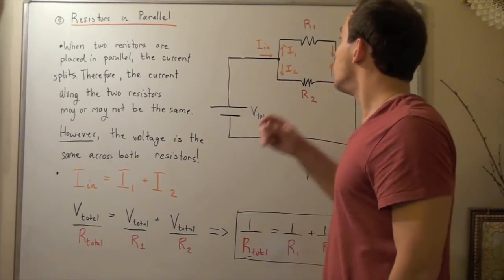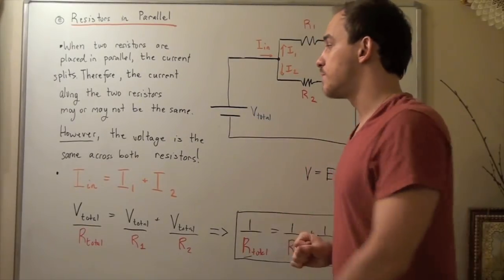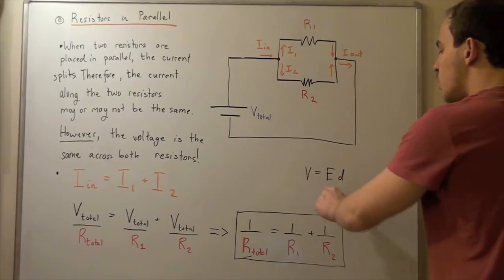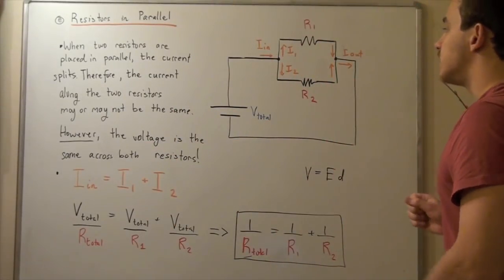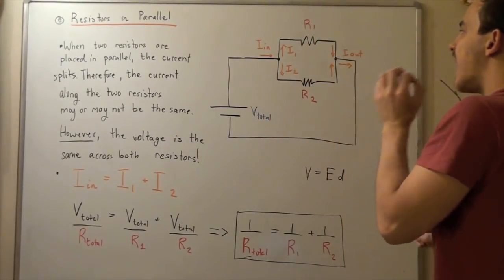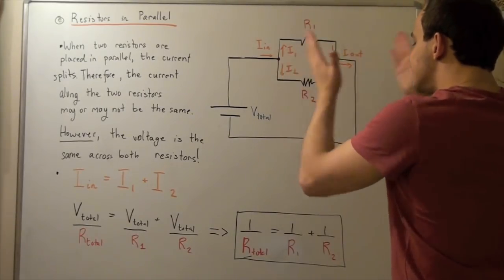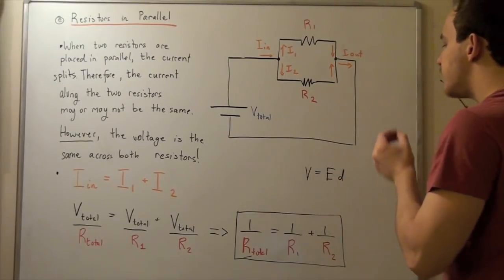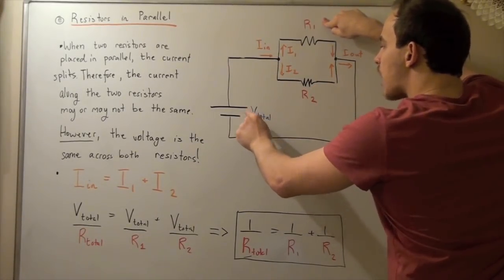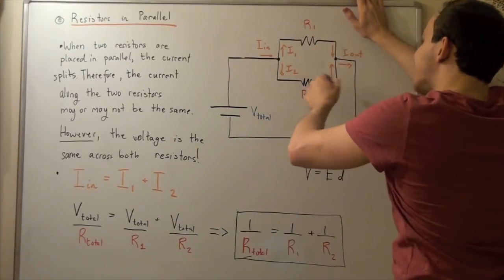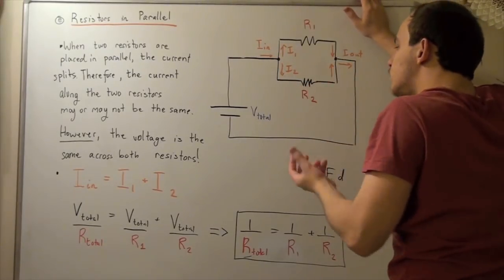Notice the following result: the voltage, given by the formula V equals electric field times distance, is the same across both resistors. The electric field produced in this area is constant, and the distance between the two points is exactly the same for both resistors. Since E and D are the same, our voltage across both resistors is identical — and in fact, our voltage across both is equal to V total. So the current through each branch may differ, but the voltage V total is the same across both resistors.